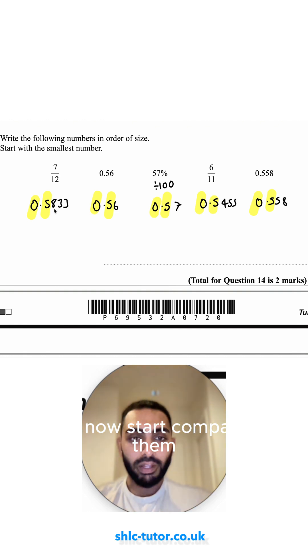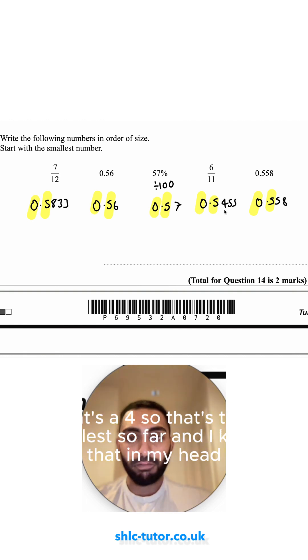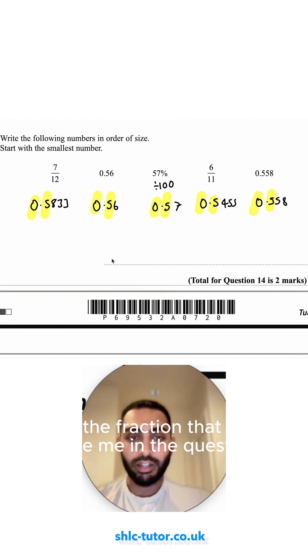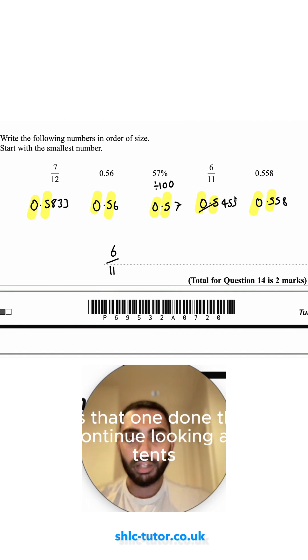I can now start comparing the hundredths. This is an eight, this is a six, that's the smallest so far. That's a seven, so I ignore that. That's a four, so that's the smallest so far. That's a five. So the smallest one would be this one, and I write six elevenths. I use the fraction that they gave me in the question, so six over 11. That's that one done.